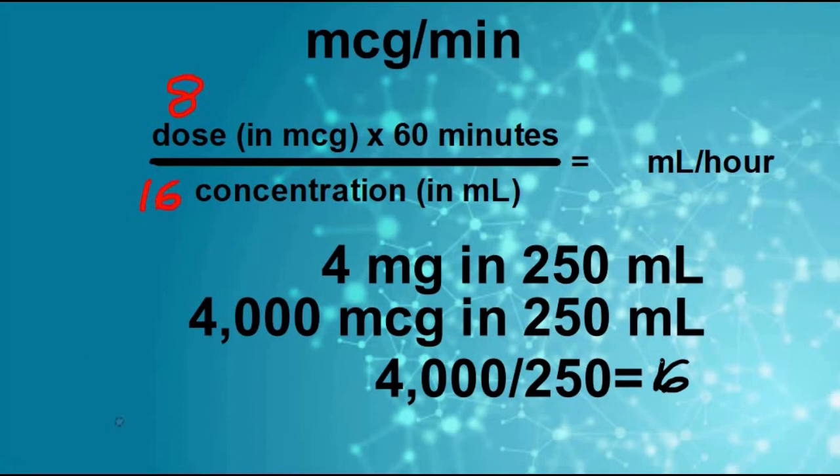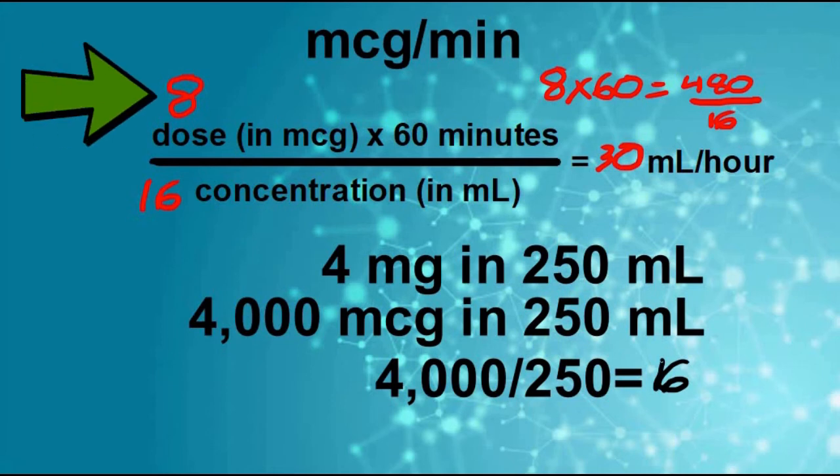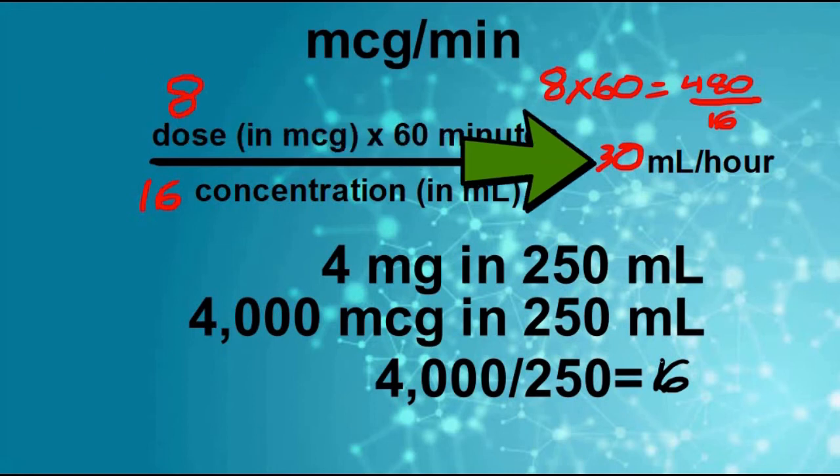And now we have everything we need. Eight times 60 is 480. 480 divided by 16 gets you 30 milliliters per hour. So to start off, we're going to give eight micrograms per minute, and we're going to set our pump for 30 milliliters per hour.